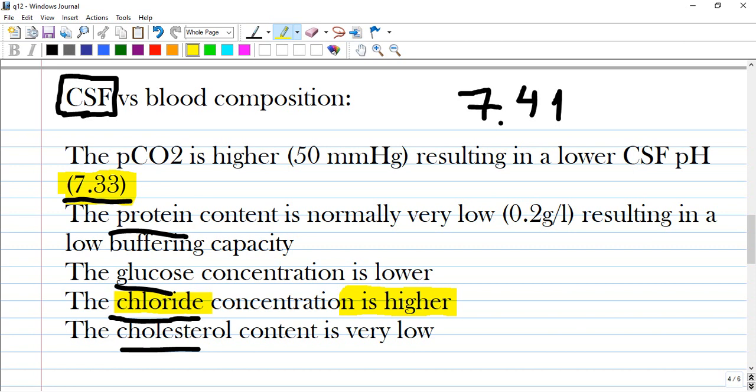The protein content is normally very low, 0.2 g/l, resulting in a low buffering capacity. The glucose concentration is lower. The chloride concentration is higher. The cholesterol content is very low.